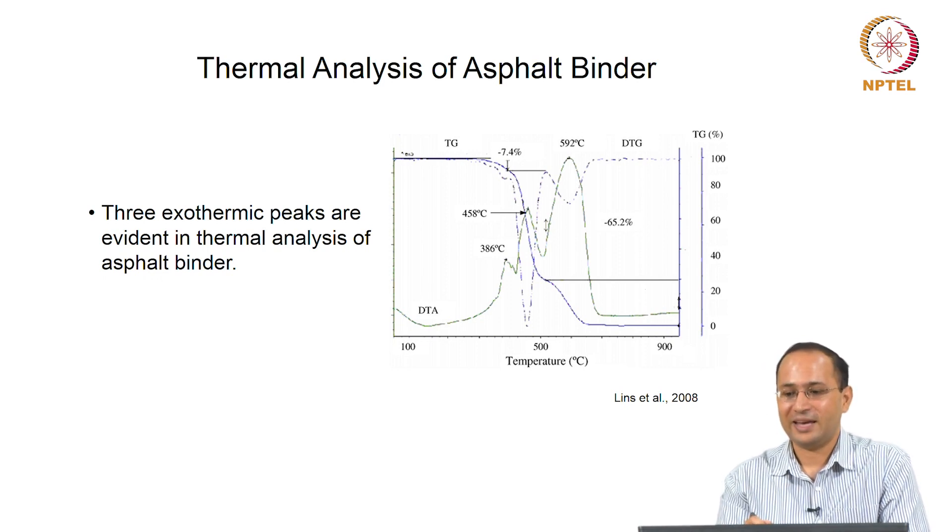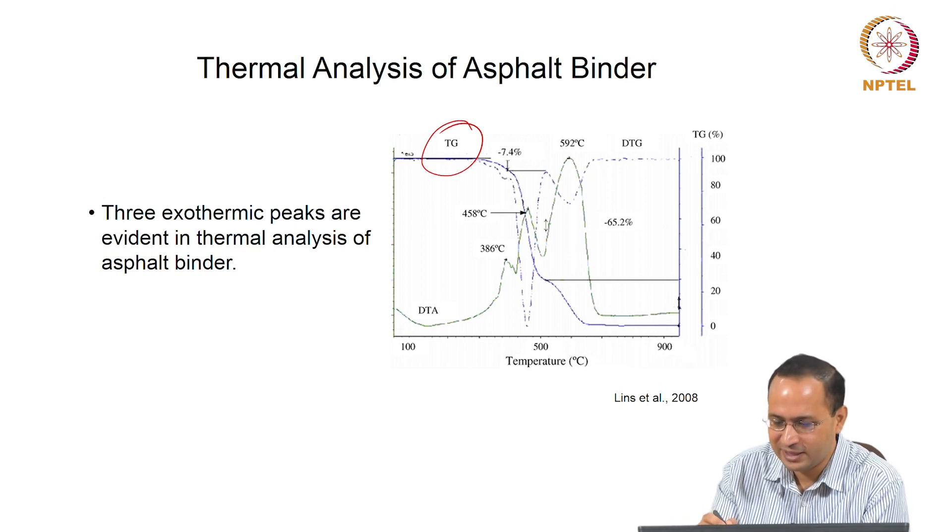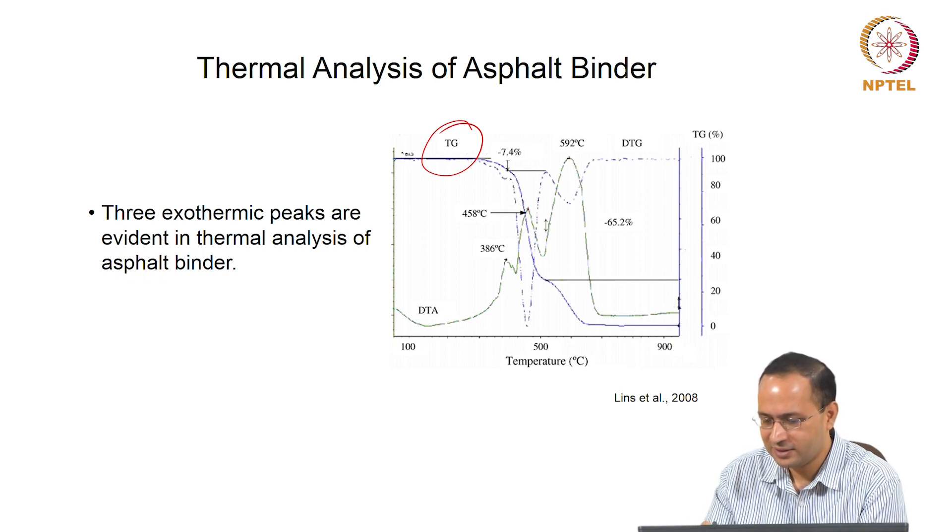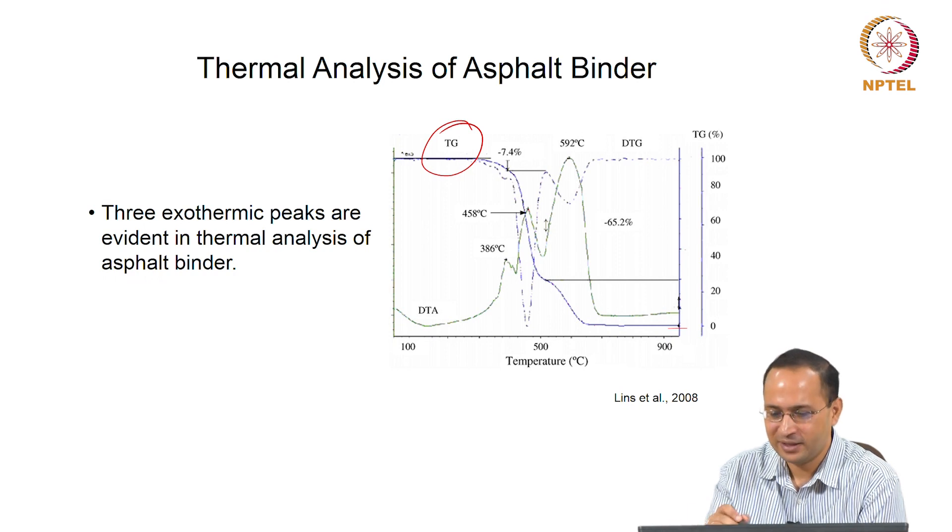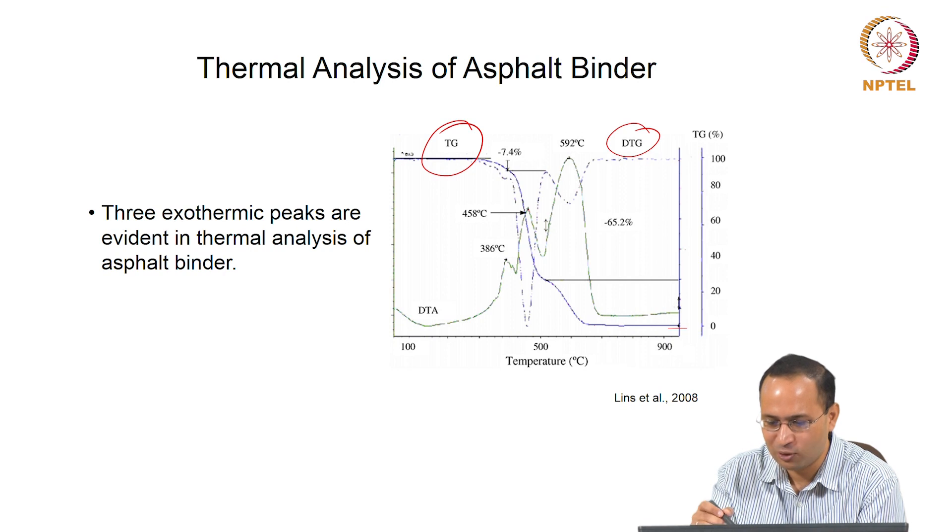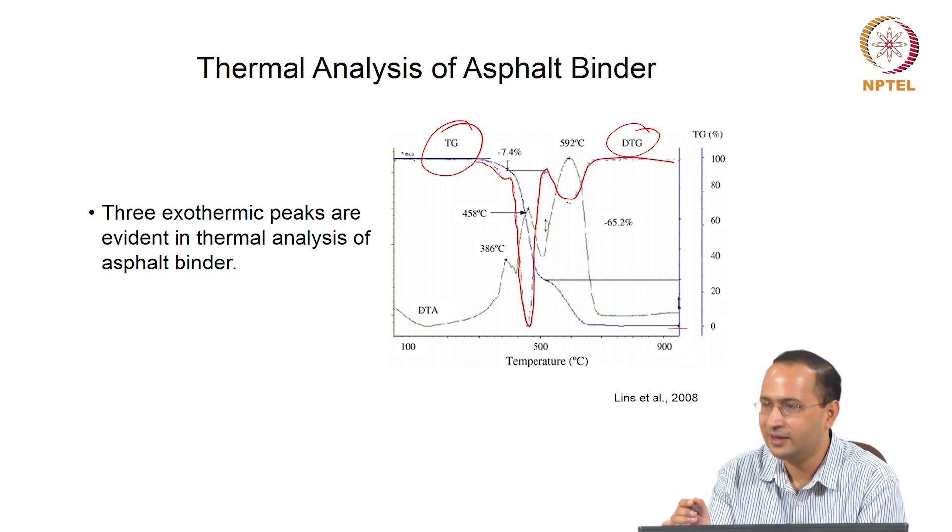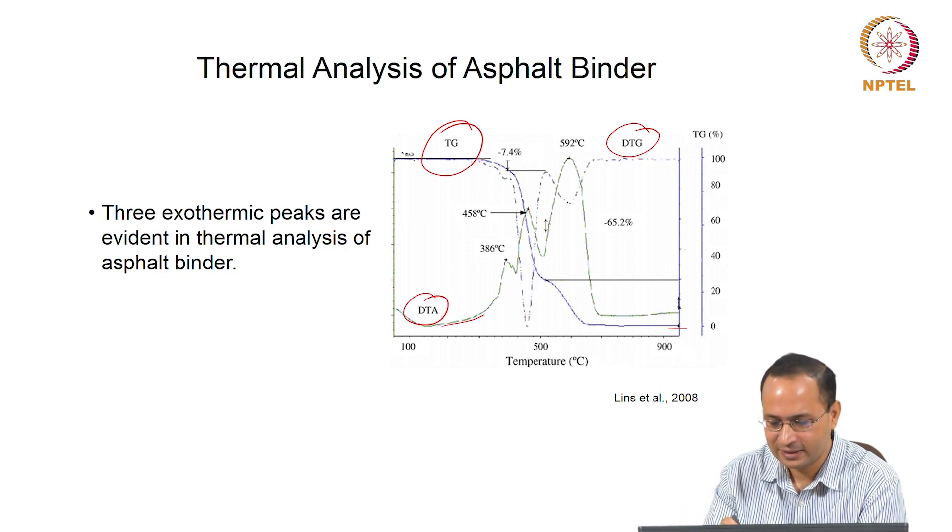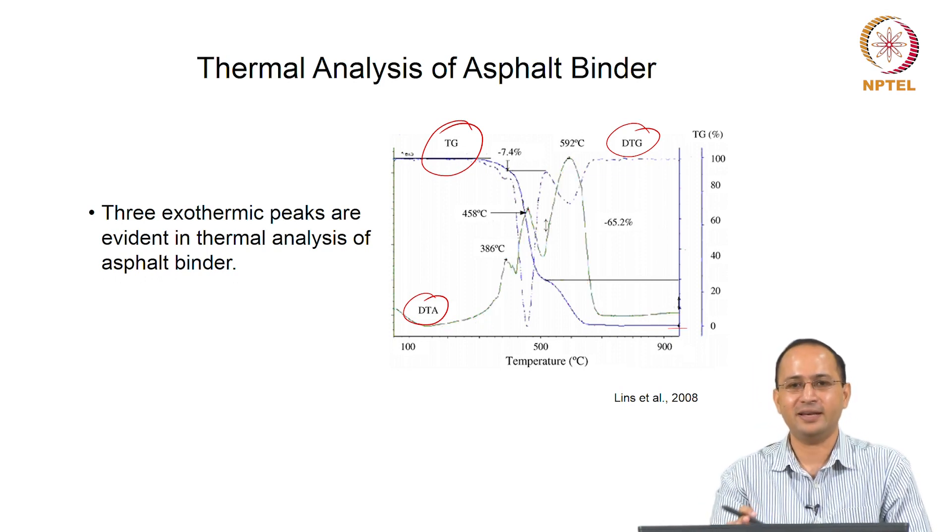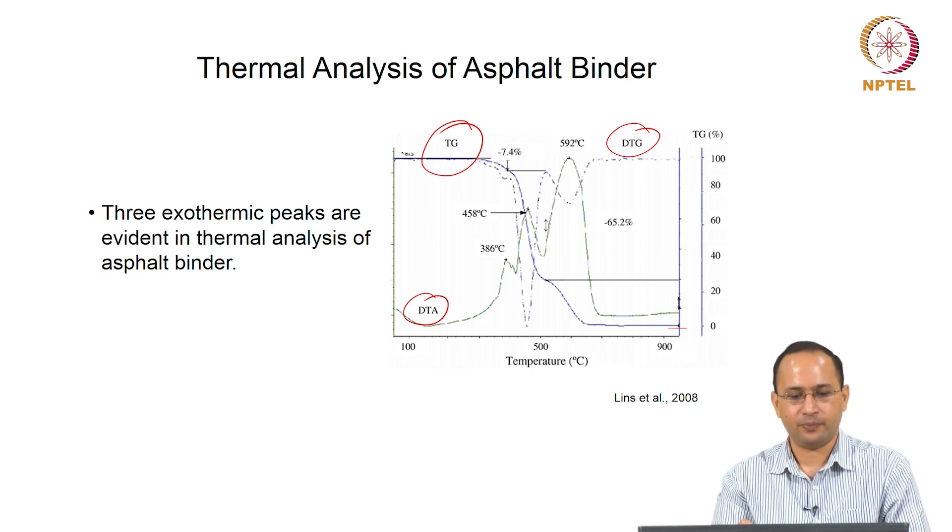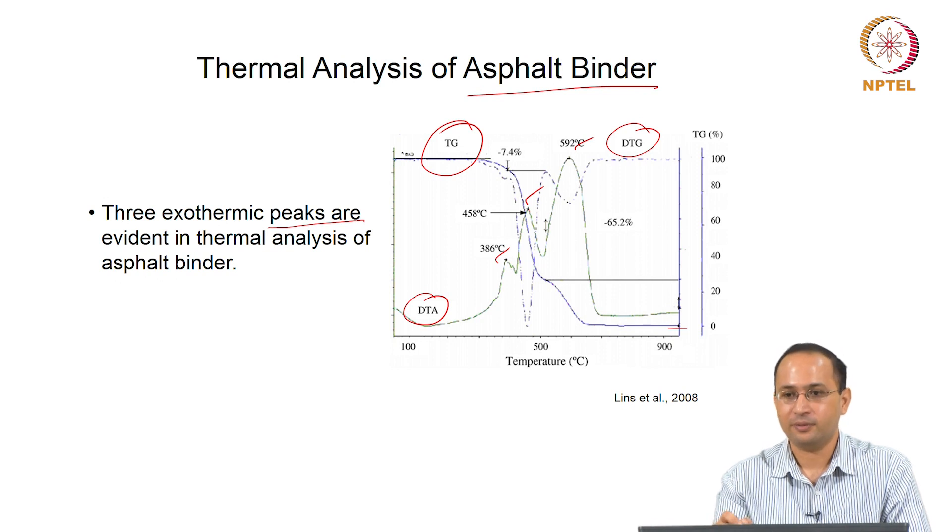Similarly you can do that for calcium carbonate also. Plot DTG, you will know the temperature regimes, then calculate the area or measure the weight mass loss in that region. Thermal analysis can also be used for asphalt binders. This is one example using TGA. First, TG curve is there - the blue one. You see continuous mass loss. By around 700 degrees Celsius, almost everything is lost. You see almost 100 percent weight loss. Now you have DTG showing change in slope. Then this is the DTA. Basically, you can use this thermal analysis technique to understand the asphalt binder. You see three exothermic peaks evident in thermal analysis of asphalt binder.